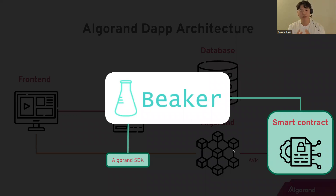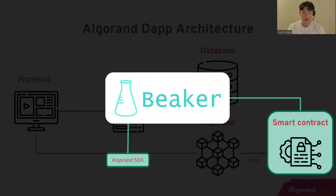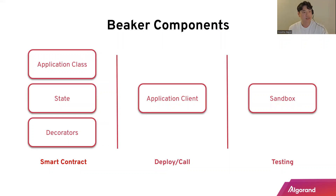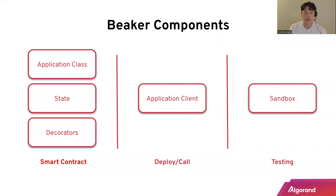Beaker is a framework that improves both the Algorand SDK and PyTeal — the smart contract aspect. These are the components Beaker provides for the smart contract, for deploying and interacting with the smart contract it provides the Application Client, and for testing it provides the sandbox module.